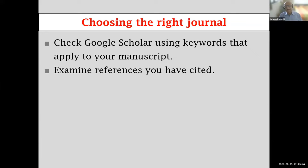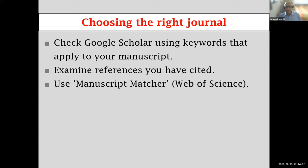If your target journal does not feature even once in your list of references, something is amiss — either your choice of journal is wrong or your literature search leaves something to be desired. Ideally, your target journal should appear among the references you have cited. In addition, you can use web-based services such as Web of Science's Manuscript Matcher.